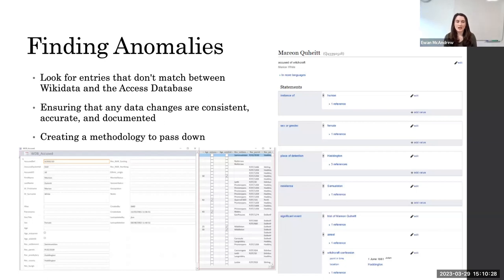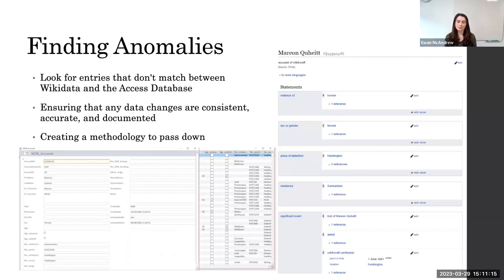Our goals are to make sure that any data changes we make are consistent, accurate, and documented. That means making sure that any updates we make, when consulting with the academics who originally were in charge of this project, are documented so we know exactly where our sources are for any changes. We also want to make sure we know which places we've updated the data and where maybe other members of the Wikidata community have stepped in and added information. We also want to create a methodology to pass down — I'm just the latest in a string of Wikidata interns and I won't be the last, so we want to make sure that even as the people in charge of this project change, the project itself stays alive and tied back to the original source.